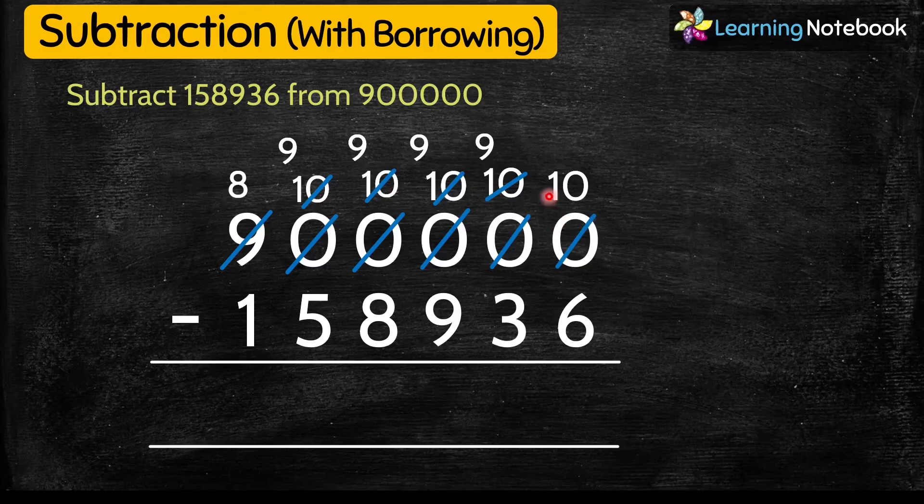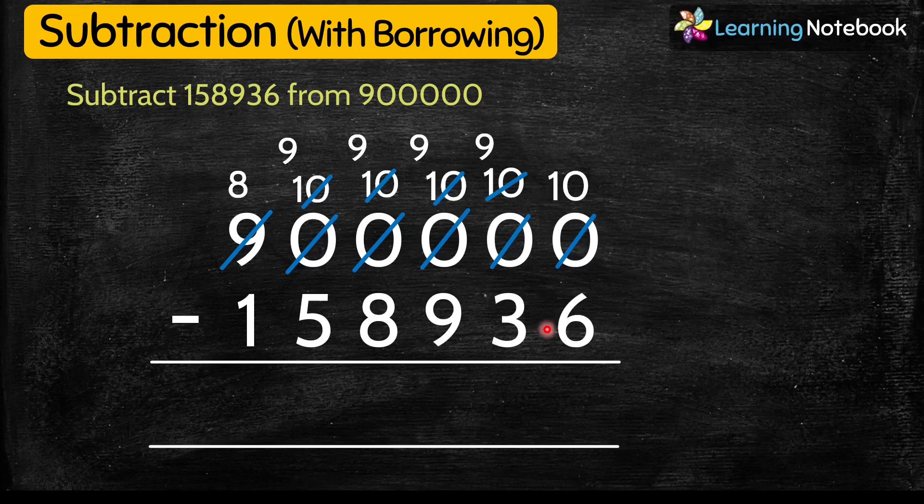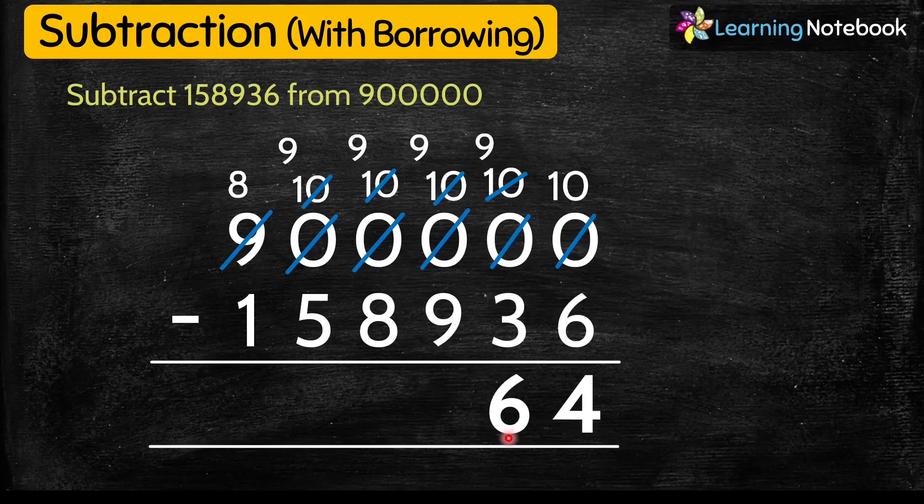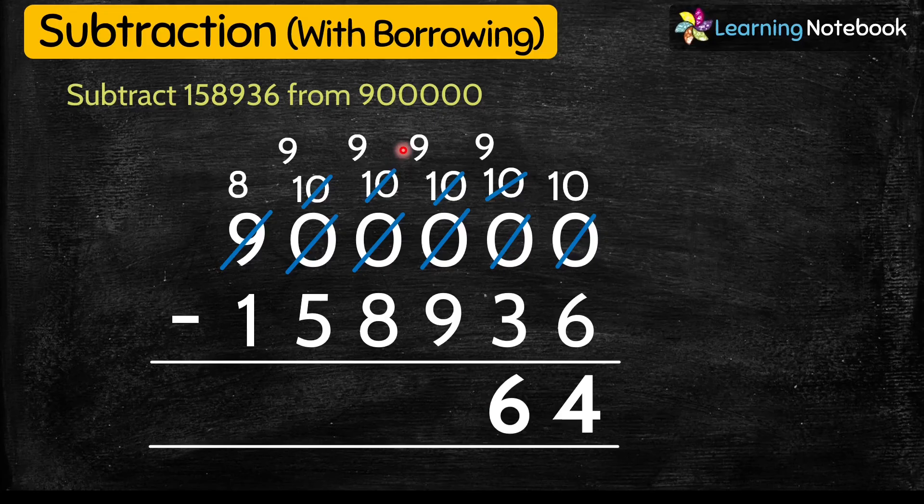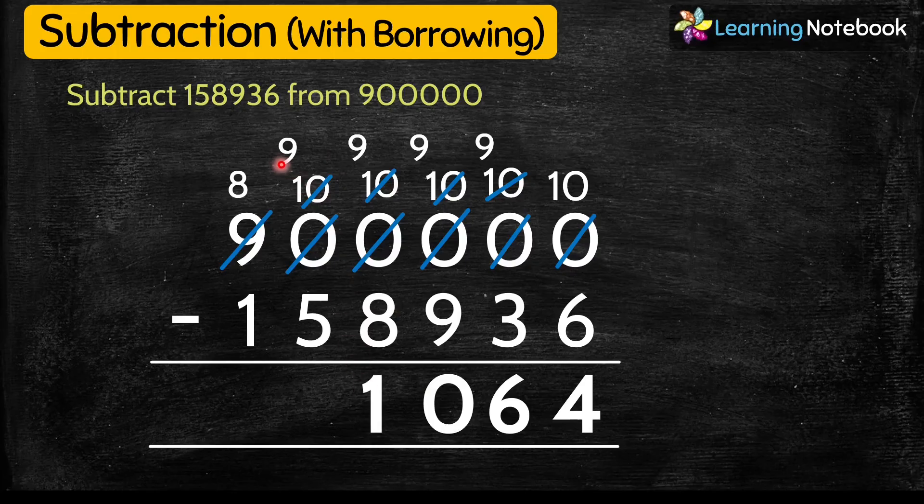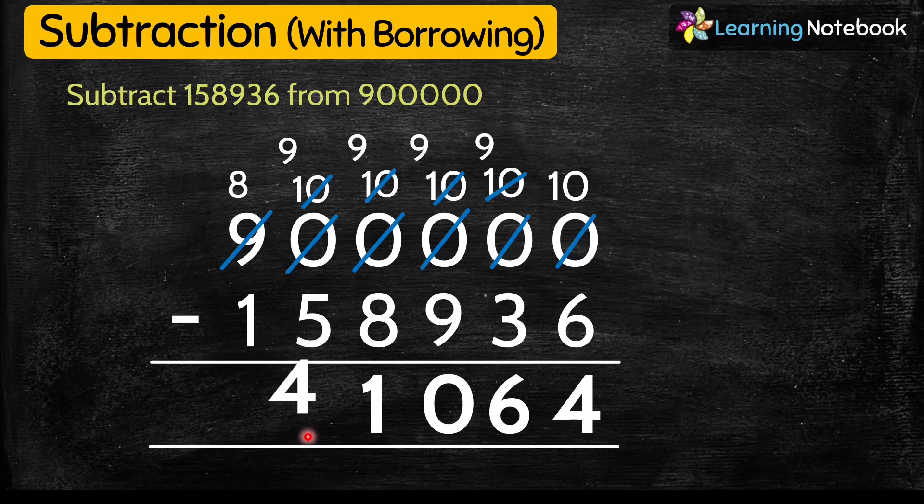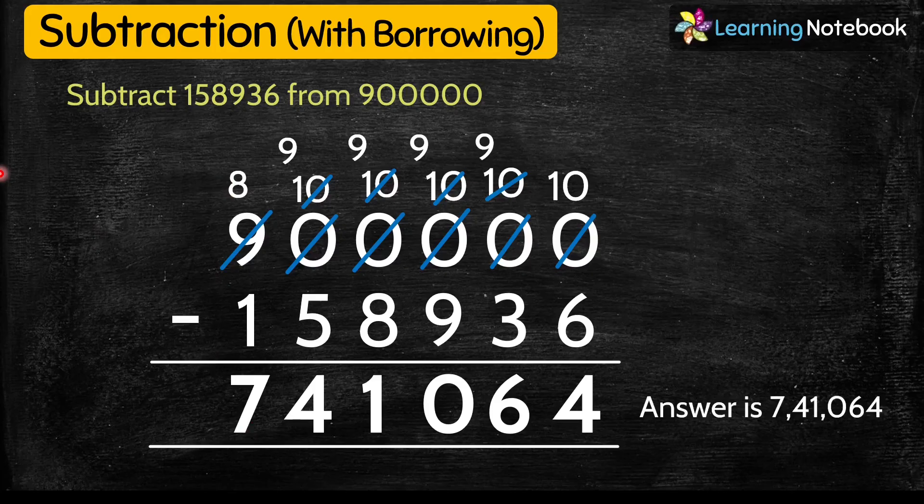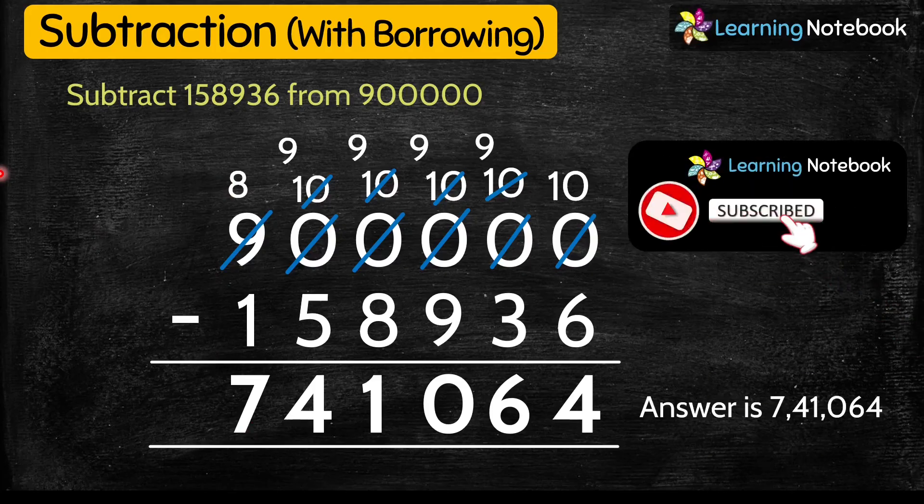So 10 minus 6 equals 4. Next, 9 minus 3 equals 6. Next, 9 minus 9 equals 0. Then 9 minus 8 equals 1. Next, 9 minus 5 equals 4. And lastly, 8 minus 1 equals 7. So answer is 741,064.